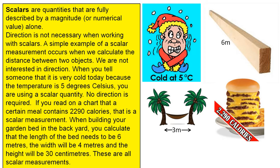When you tell someone that it is very cold today because the temperature is 5 degrees Celsius, you are using a scalar quantity. No direction is required.